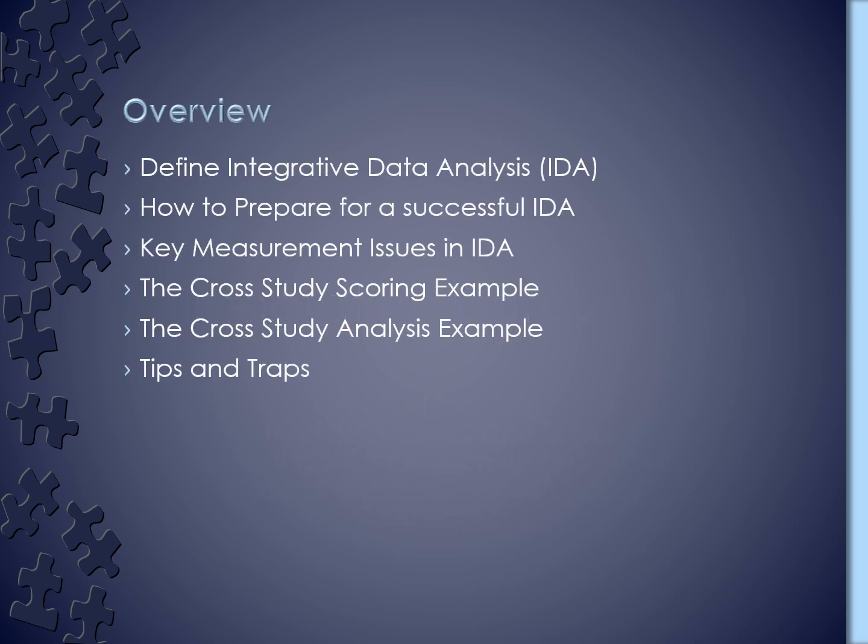We're going to start today talking about what integrative data analysis is and what you can do to prepare for engaging in a successful IDA collaboration. Then we're going to spend some time talking about key issues in measurement, as this is where a lot of the questions arise when people are trying to figure out if IDA is a feasible thing to do with the types of data they have access to. We'll then move to talking about some examples of what you can do in terms of creating scores from those measures and the types of analysis that you might use those scores to conduct. We'll give some examples from the work that we've done in the cross study, and finally we'll talk about some tips and traps.